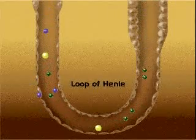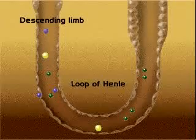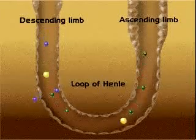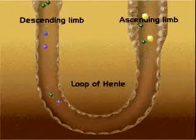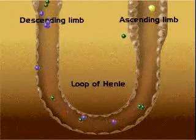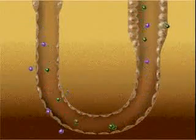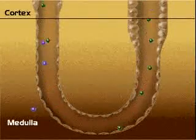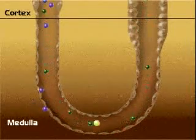The direction of flow in the descending limb of the loop is opposite from the direction of flow in the ascending limb. By flowing in opposite directions in such close proximity, a unique interaction occurs. The loop of Henle dips from the cortex of the kidney into the medulla and is surrounded by the medullary interstitial fluid.